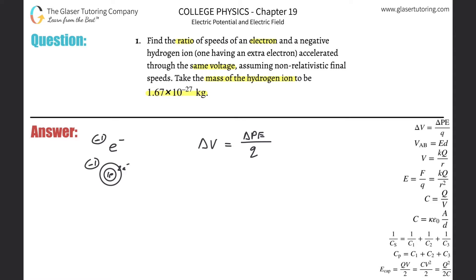I can use subscripts here and basically say the change in potential for the electron is going to be equal to the change of the potential energy of the electron divided by the charge of the electron. For then the hydrogen ion, I can say the potential difference of the hydrogen ion is basically going to be equal to the change of the potential energy of the hydrogen ion, then all divided by the charge of the hydrogen ion. So now remember, these parts are equivalent. The potential they said is going to be the same potential difference, because it said same voltage. Voltage is potential.